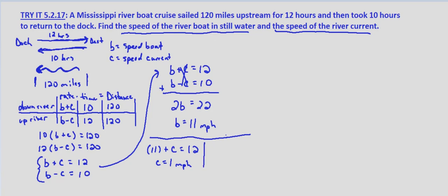B minus C equals 10. So 11 minus C equals 10. Subtract 11 from both sides, we get negative C equals negative 1. Divide both sides by negative 1, we get C equals 1 mile per hour.